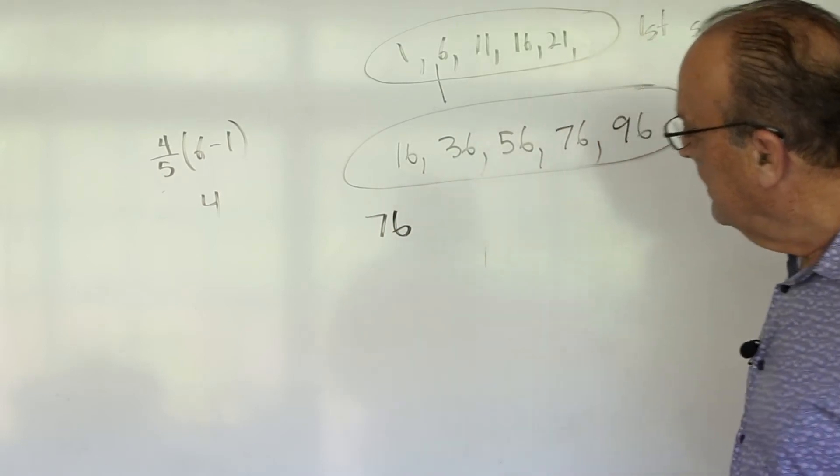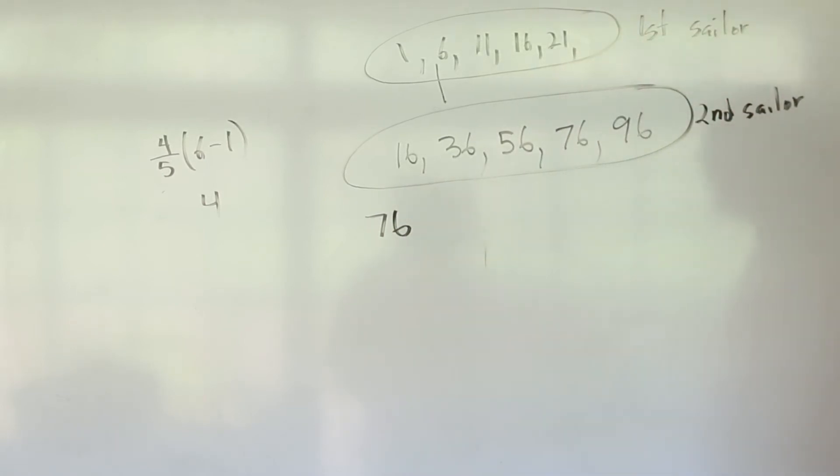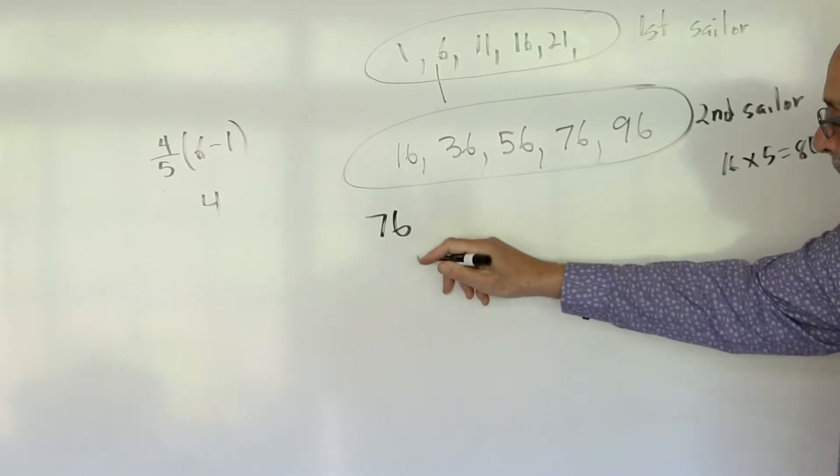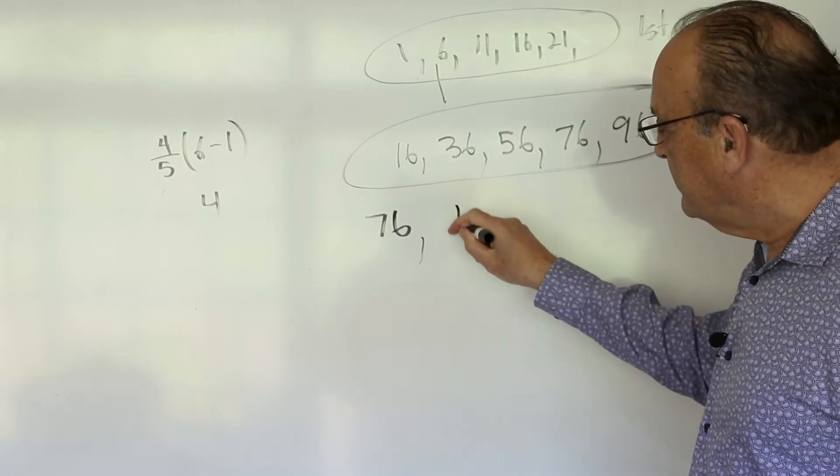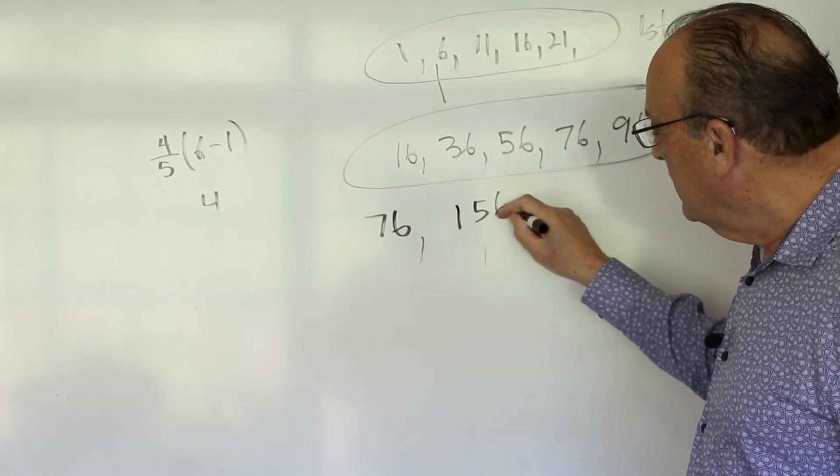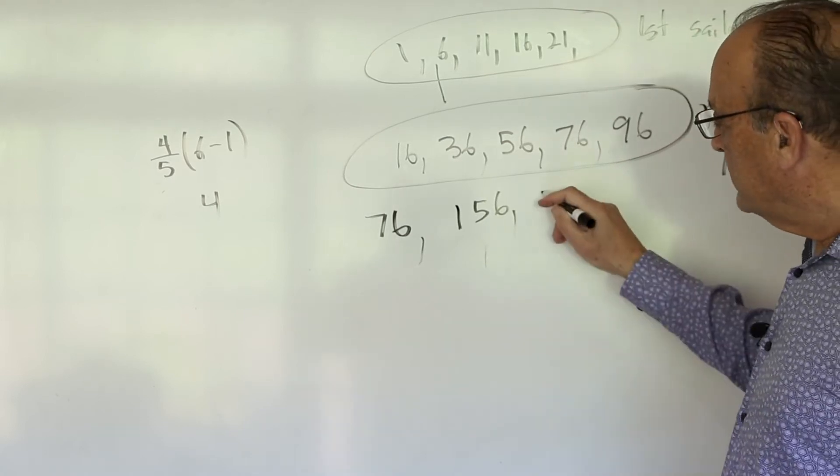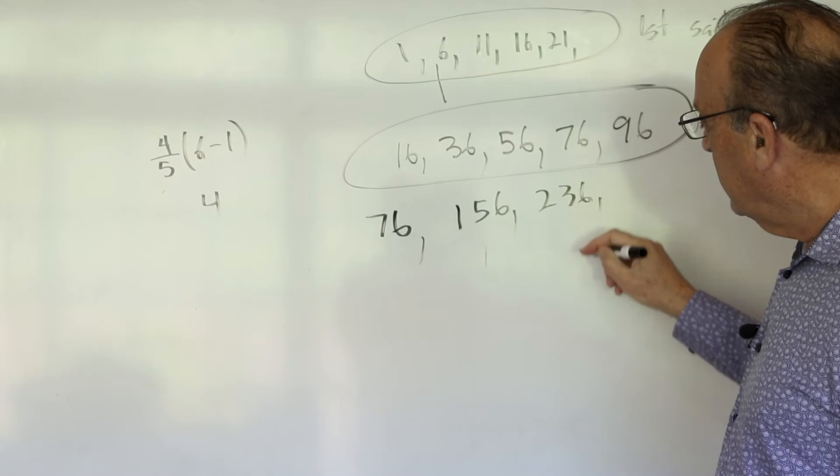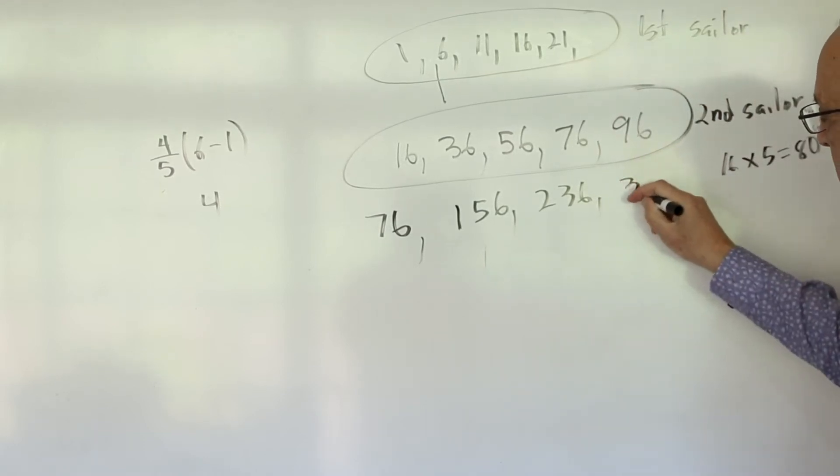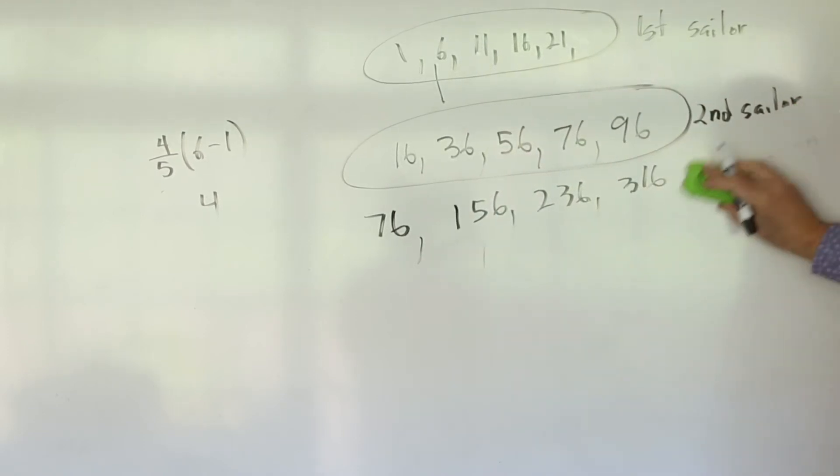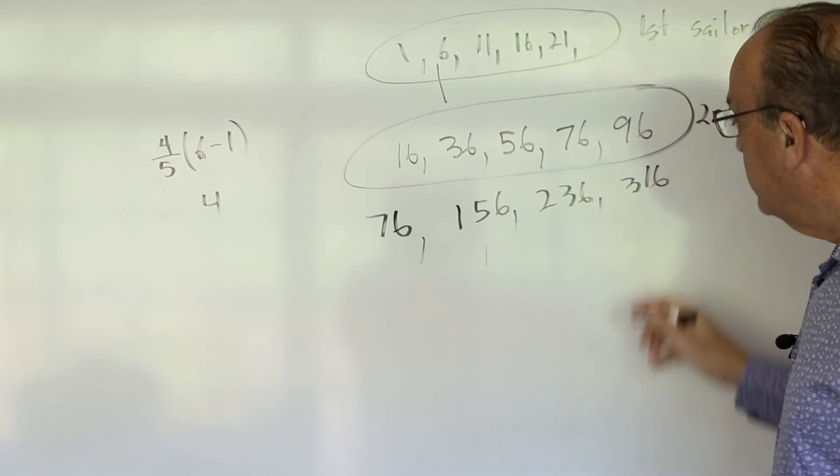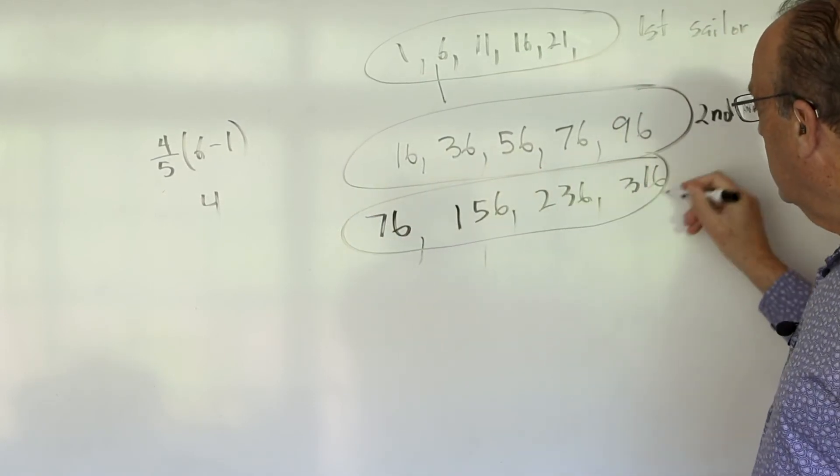So we have 76. Now remember, the numbers are getting bigger by 16. We have to times by 5. 16 times 5 is 80. So if we add 80 to this, we'll get another number that ends in 6. So 80 plus 76 is 156. Then you add 80 again. So that's 236. Add 80 again. That's 316. And so forth. So these are possibilities for the third sailor.